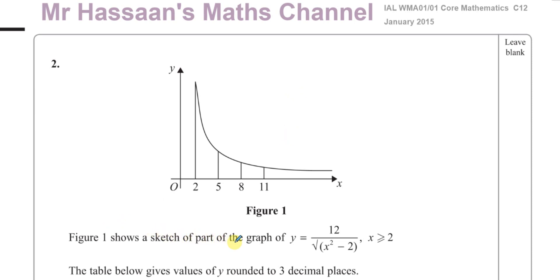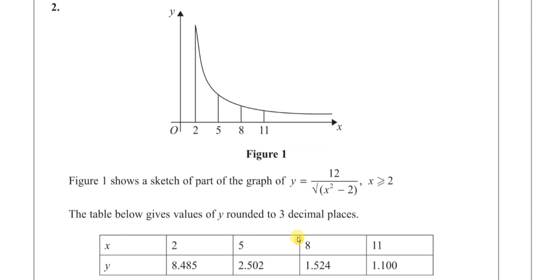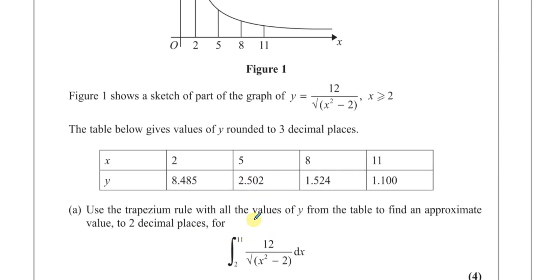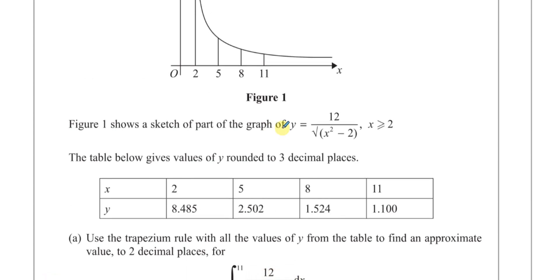Figure 1 shows a sketch of part of the graph of y equals 12 over the square root of x squared minus 2. The table below gives values of y rounded to 3 decimal places. Use the trapezium rule with all the values of y from the table to find an approximate value to 2 decimal places for the integral between 2 and 11 of this function.